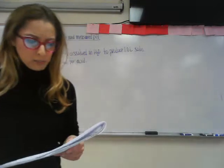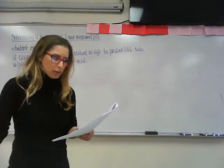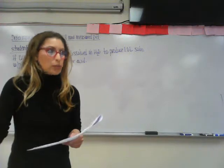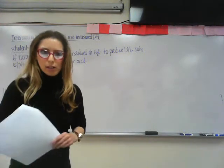Student 7 says, if 0.055 moles of butanoic acid is dissolved in water to produce a liter solution with a pH of 2.72, determine Ka for the acid.